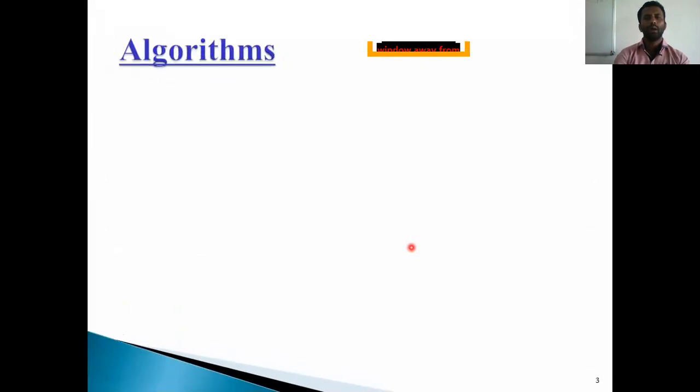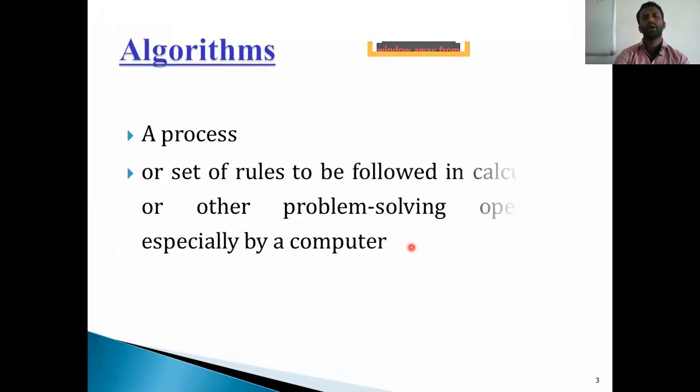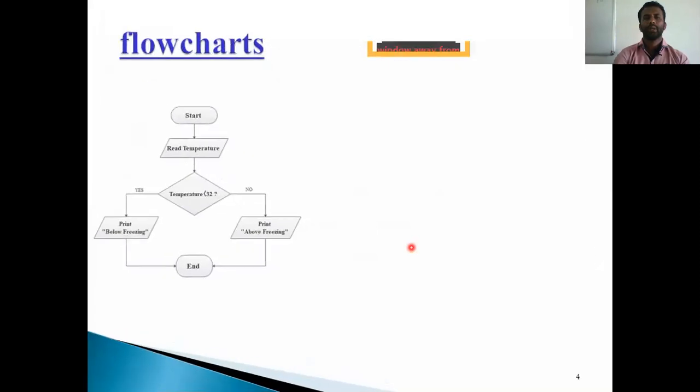An algorithm is a process or set of rules to be followed in calculations or other problem operations, especially for computers. Then flowcharts. For example, first start here. Start and read the temperatures. Then temperature less than 32 or greater than, if we want, then yes or no. Then print below freezing temperatures and print above freezing temperatures. Then finally end. This is an example of flowchart format.